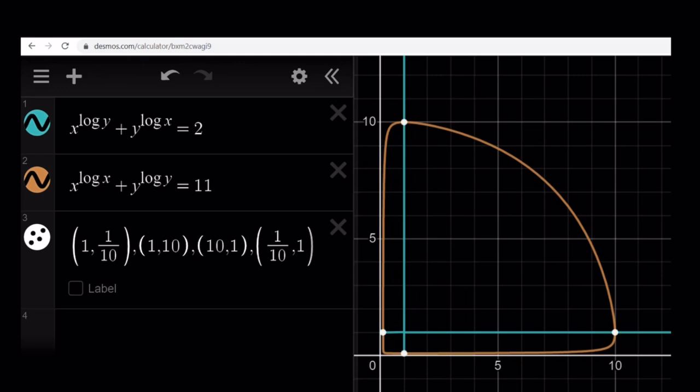And notice that the horizontal line and the vertical line and this weird closed shape, they intersect at four points. And those points are 1 comma 1 tenth, 1 comma 10, 10 comma 1, and 1 tenth comma 1.